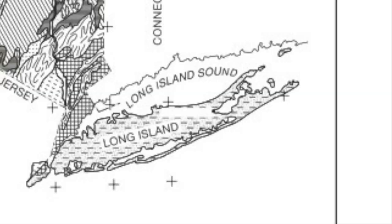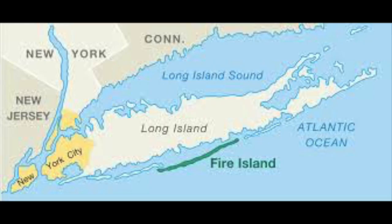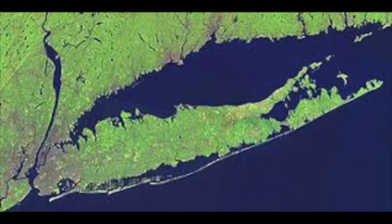Barrier islands in New York State. The maps of New York State in the earth science reference tables show the series of islands that separate the south shore of Long Island from the Atlantic Ocean. Jones Beach and Fire Island are part of this series of barrier islands. These features are common on gently sloping coastlines with abundant sand.